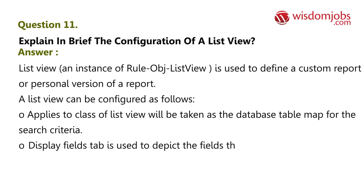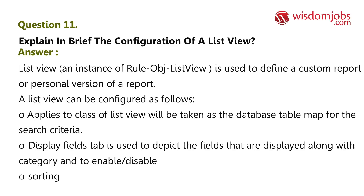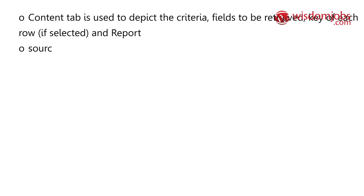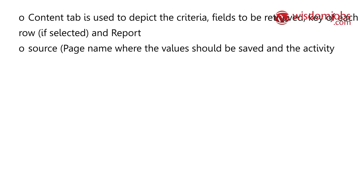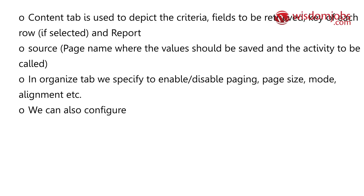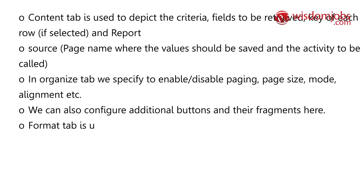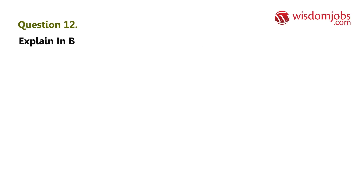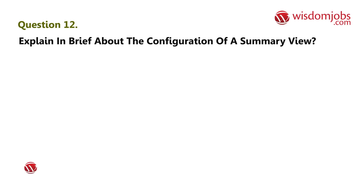(2) The display fields tab is used to depict the fields displayed, along with category, and to enable or disable them. (3) Sorting. (4) The content tab is used to depict the criteria fields to be retrieved, key of each row if selected, and the report. (5) Source page name where values should be saved and the activity to be called. (6) In the organize tab, we specify paging, page size, mode, alignment, etc. (7) We can also configure additional buttons and their fragments. (8) The format tab depicts formatting like even/odd coloring and details on single click.